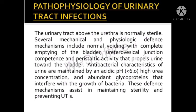Antibacterial characteristics of urine are maintained by acidic pH less than 6, high urea concentration, and abundant glycoproteins that interfere with bacterial growth. These defense mechanisms assist in maintaining sterility and prevent UTI. However, when risk factors such as stones, tumors, neurogenic bladder, urinary retention, calculi, or a catheter are present, bacteria can enter the urinary system and cause inflammation of the bladder, ureter, and kidneys.